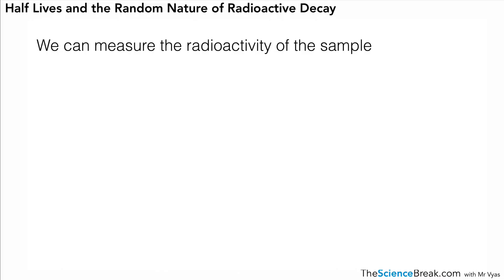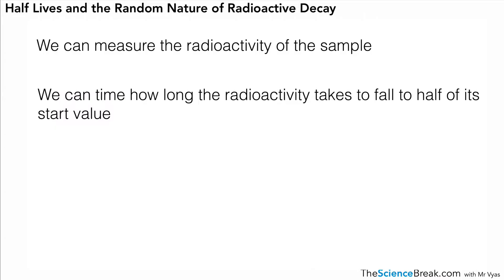However, what we can do is measure the radioactivity of the sample in something like counts per second using an instrument called a Geiger counter. We can also measure the amount of time it takes or work out how long it takes for the radioactivity to fall to half of its start value. We call that the half-life.